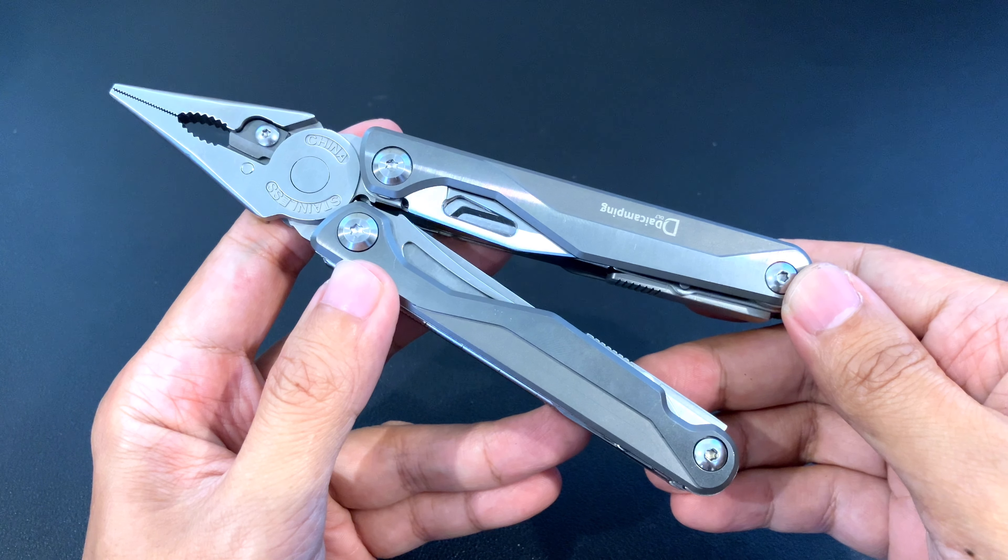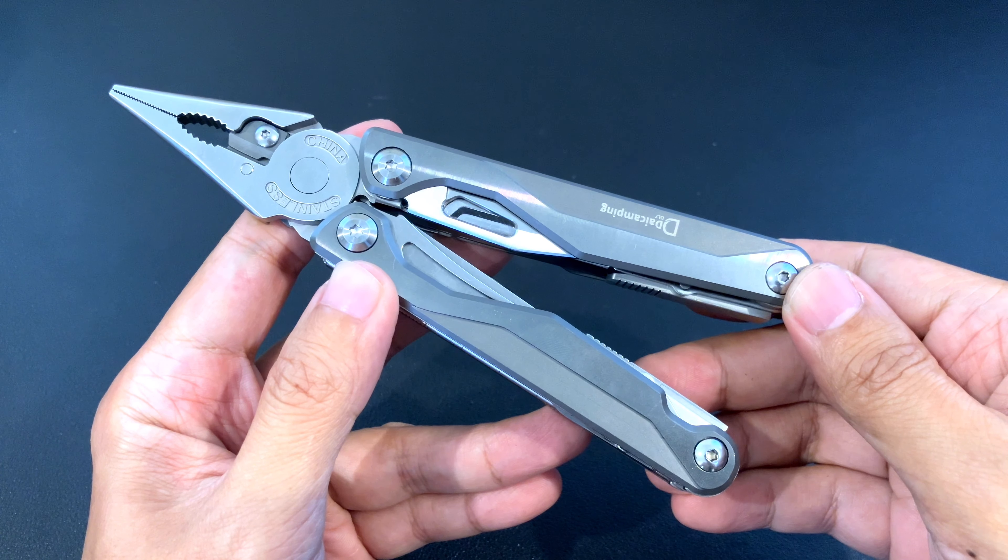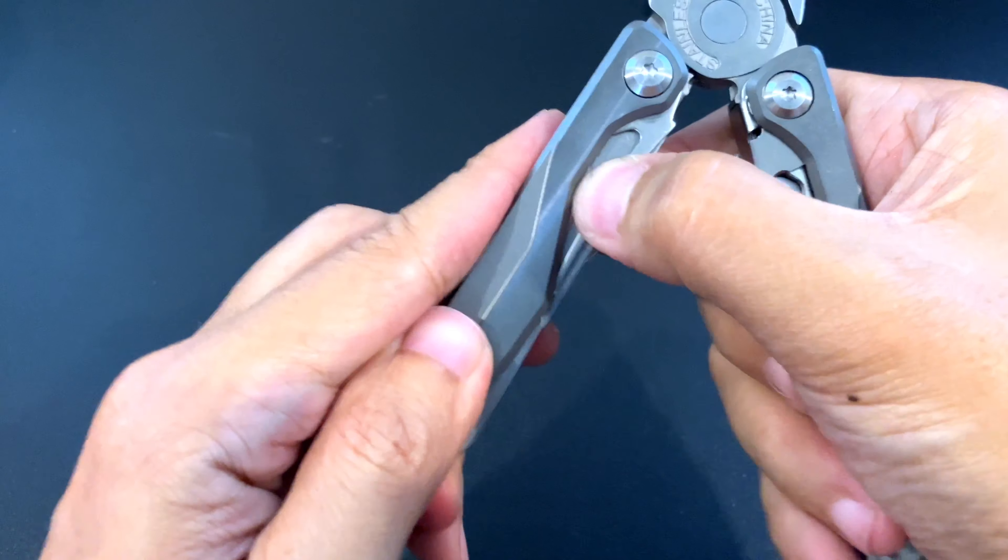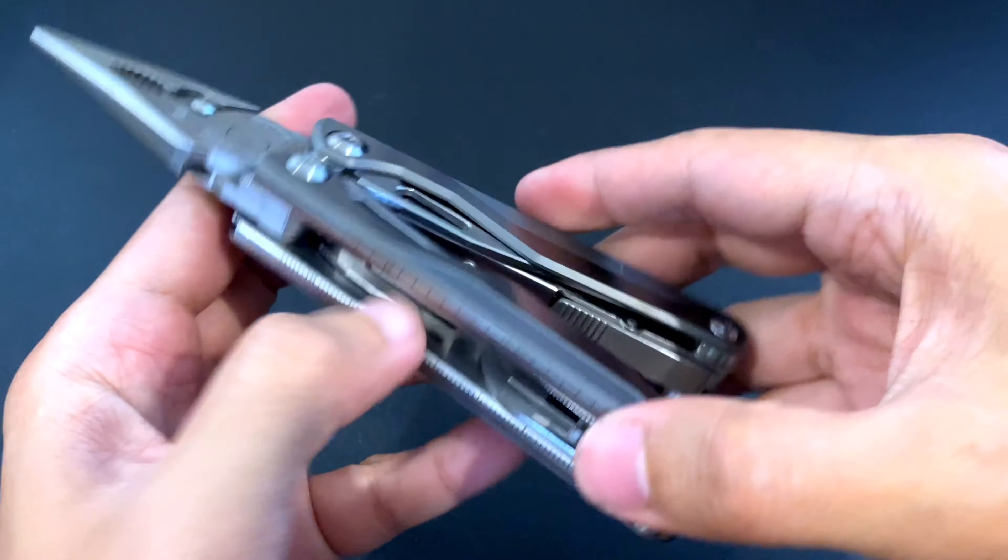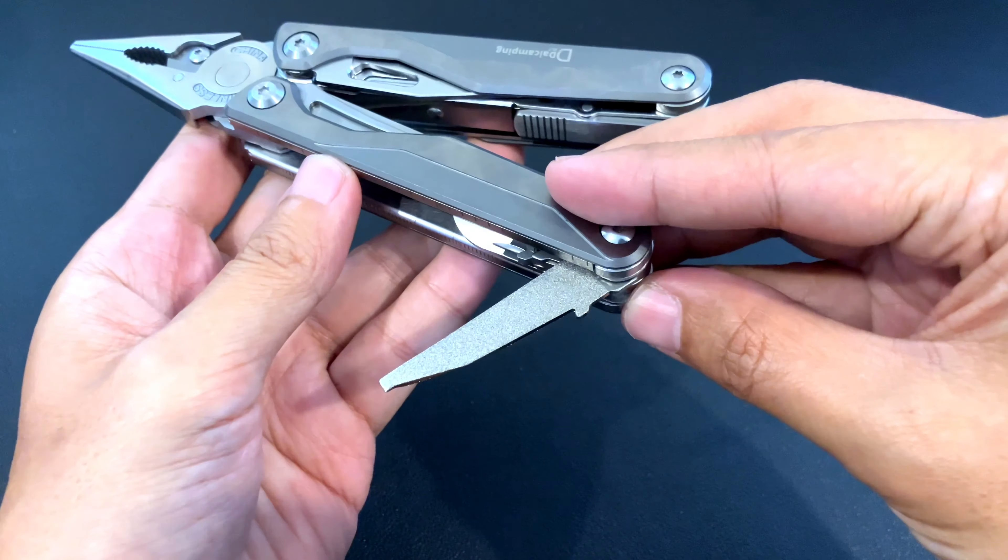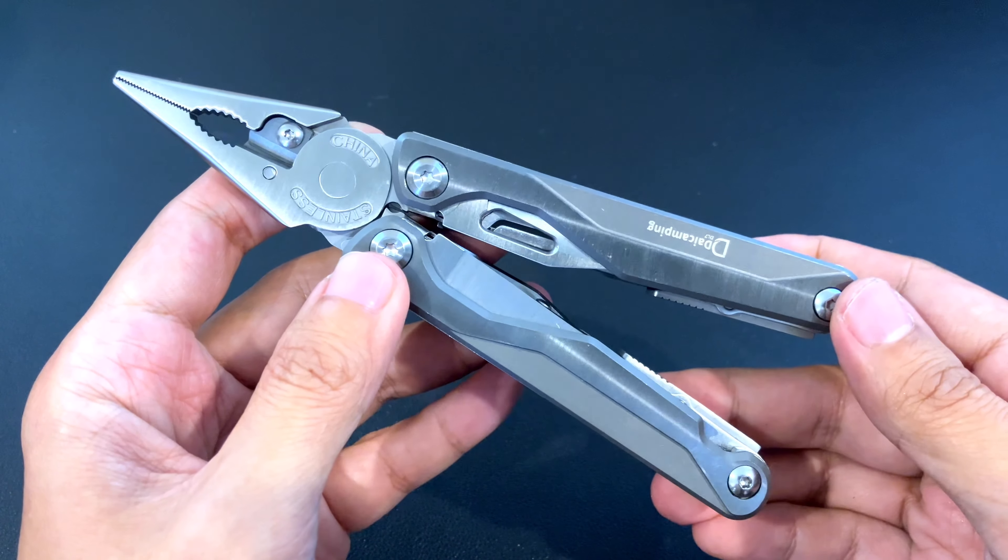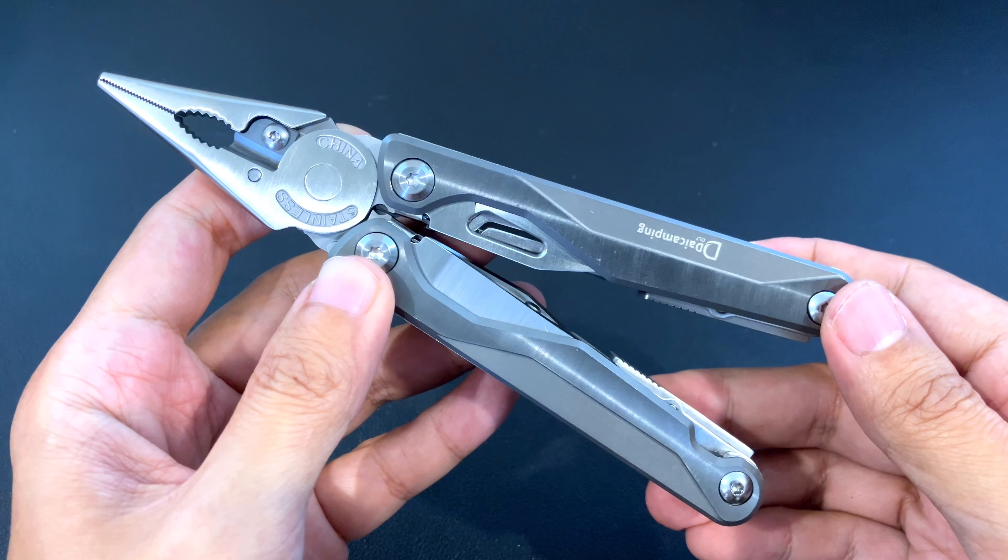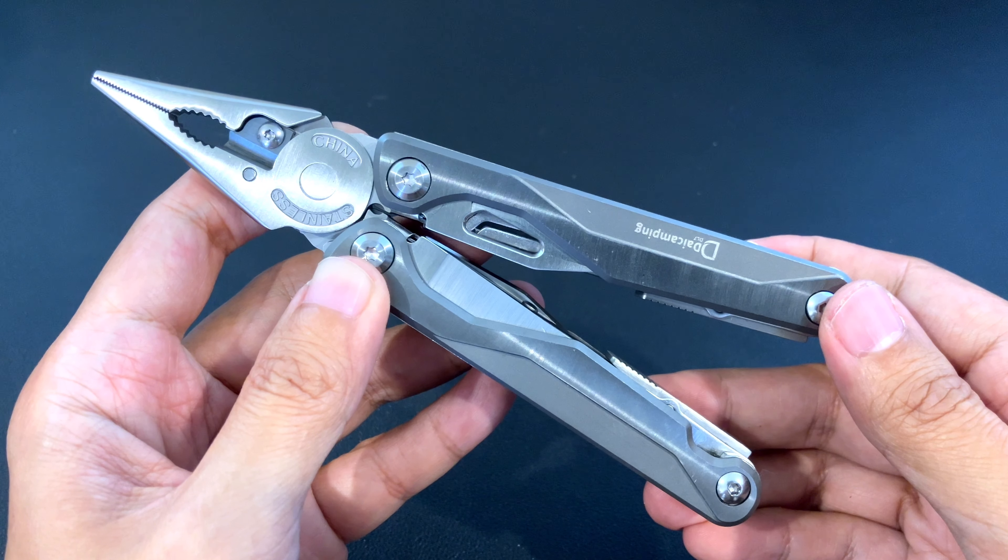That's it for my unboxing and overview of the Day Camping DL7. It has a really good toolset, probably something useful for fishing because of this scissors and the file here, which is useful for sharpening hooks. I think it differentiates enough from the Leatherman Charge to have a character of its own. And at just 40-50 dollars, it's really hard to beat. Thank you for watching.